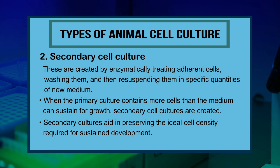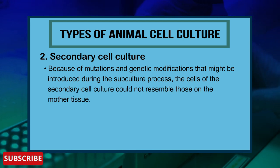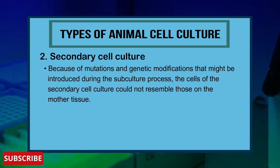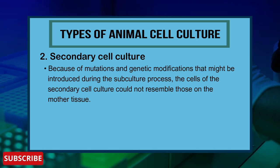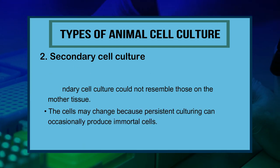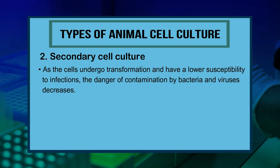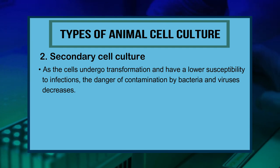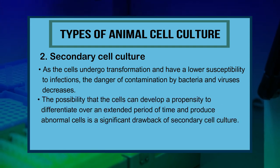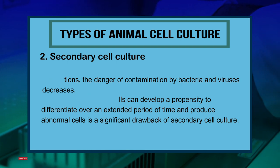Secondary cultures aid in preserving the ideal cell density required for sustained development. Due to mutations and genetic modifications introduced during subculture, the cells of secondary-line cell culture could differ from the original tissue. The cells may change because persistent culturing can occasionally produce immortal cells. As cells undergo transformation and have lower susceptibility to infections, the danger of contamination decreases. However, cells may develop a propensity to degenerate over an extended period and produce abnormal cells.